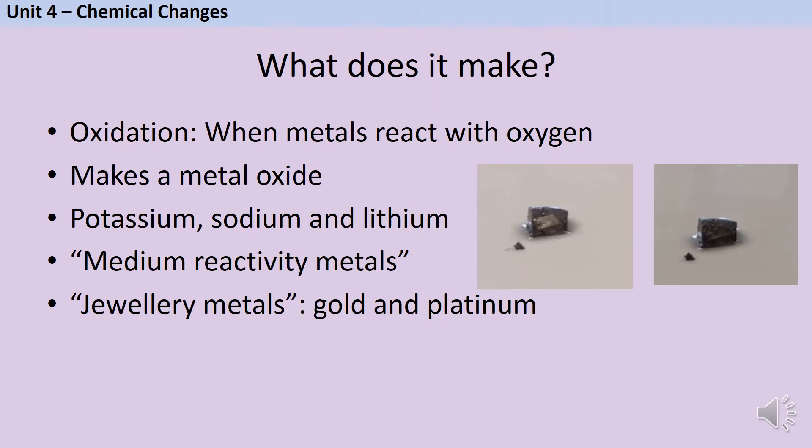Then we have metals like iron and zinc, which do form metal oxides, but not fast enough for you to watch it happening unless you heat them. And finally, we have our very unreactive metals, what I like to call jewellery metals. They're good for making jewellery out of because they're unreactive, and therefore they don't quickly tarnish. Metals like gold and platinum barely form compounds at all, and they can exist in their elemental form for a very long time without reacting.